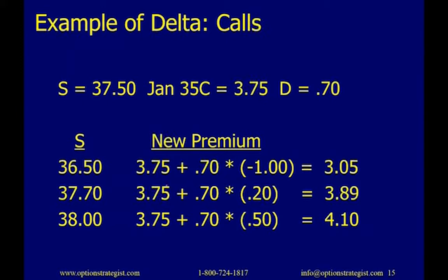Here's an example of delta using calls. We have a stock price of $37.50 and we're looking at the Jan 35 call trading at 375 with a delta of 0.7. If the stock goes to $36.50 — down a dollar — the new premium is 375 plus (0.7 × −1.00) = 375 − 70 cents = 305. If the stock went up 20 cents to $37.70, the new premium is 389. At $38, we add 0.7 × 0.5 = 35 cents for a new premium of 410.